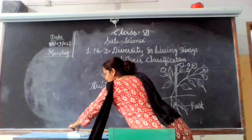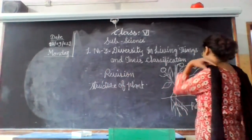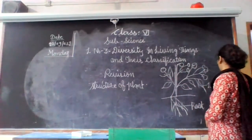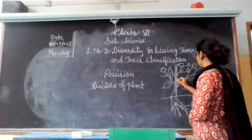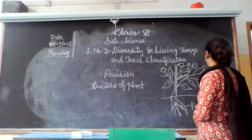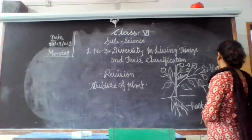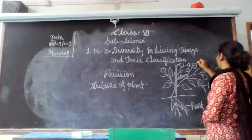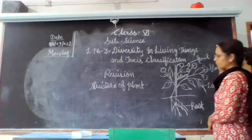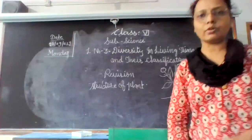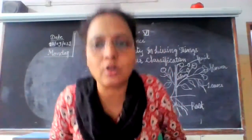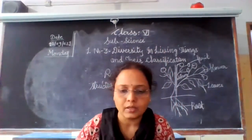So let's label this plant: root, leaves, this is the stem, and this is the fruit. This is a complete structure of a plant.